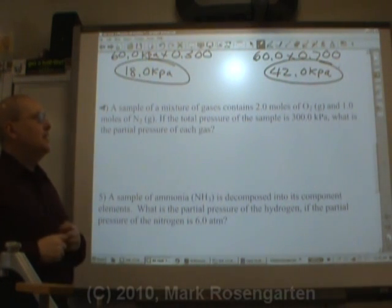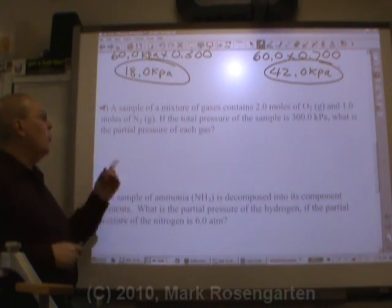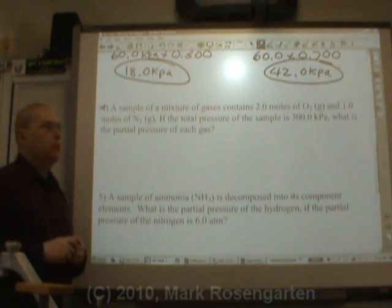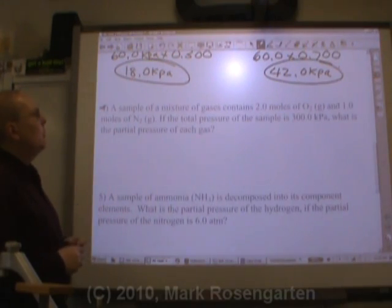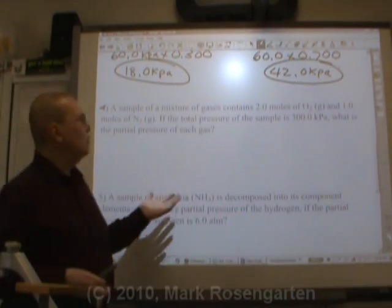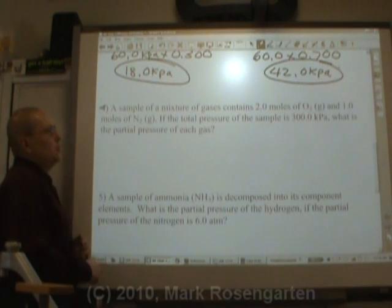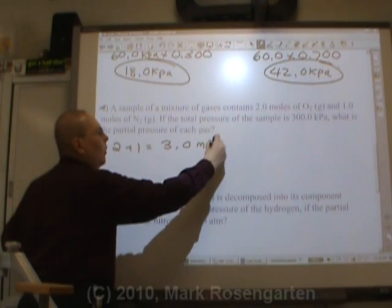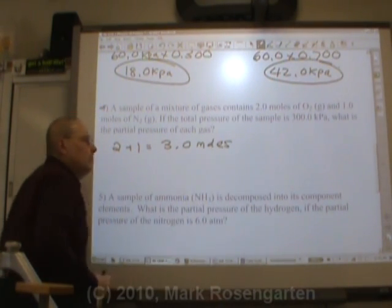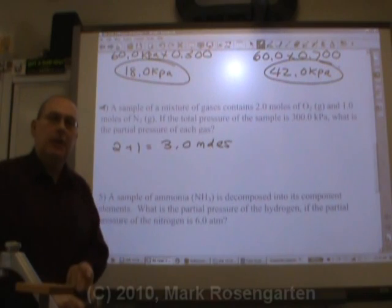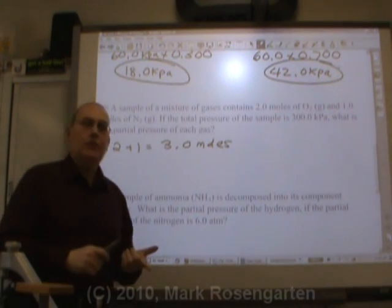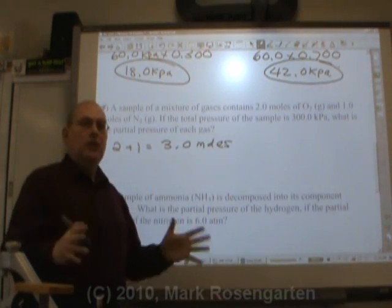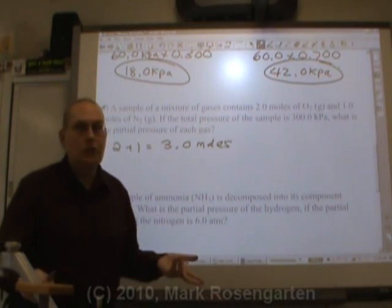The sample of a mixture of gases contains 2 moles of oxygen and 1 mole of nitrogen. If the total pressure is 30 kilopascals, what's the partial pressure of each gas? Well, let's see. How many moles of gas do we have here total? We've got 2 moles of oxygen and 1 mole of nitrogen. So 2 plus 1, well that would be a total of 3.0 moles. Now, it doesn't matter whether the mole comes from the oxygen or the mole comes from the nitrogen. Remember, Avogadro's hypothesis says it doesn't matter what kind of gas you have. Equal volumes will contain equal moles as long as their temperature and pressures are the same.